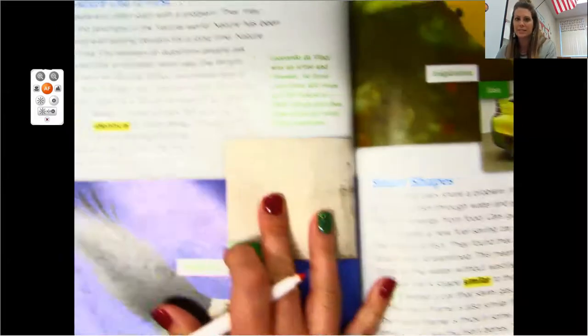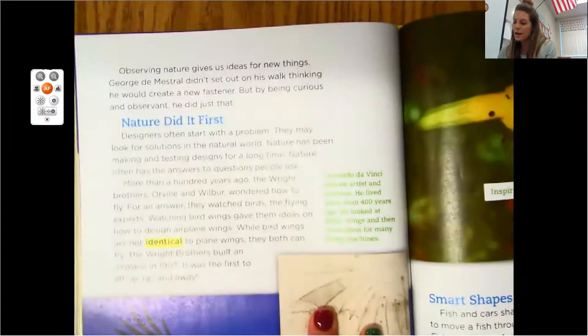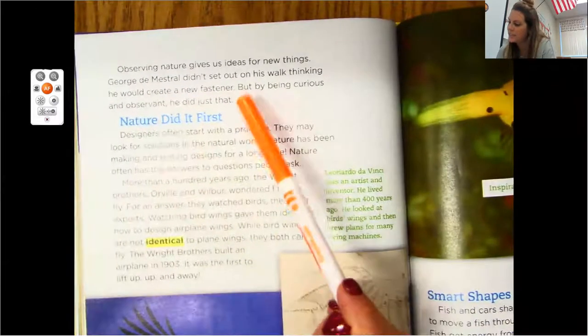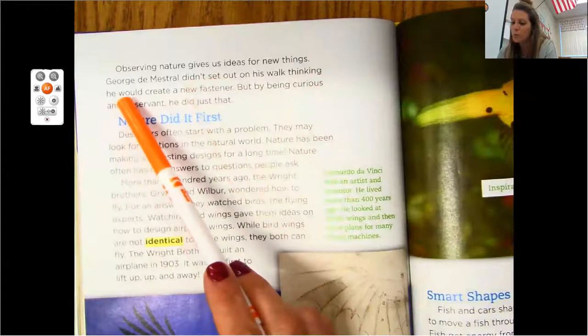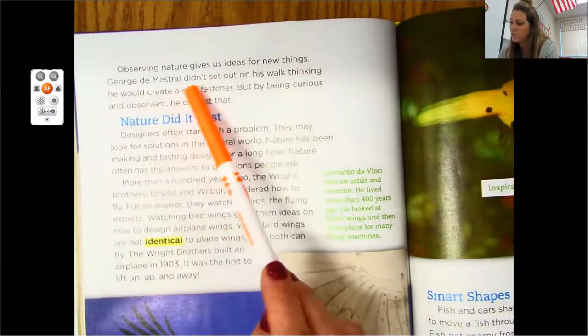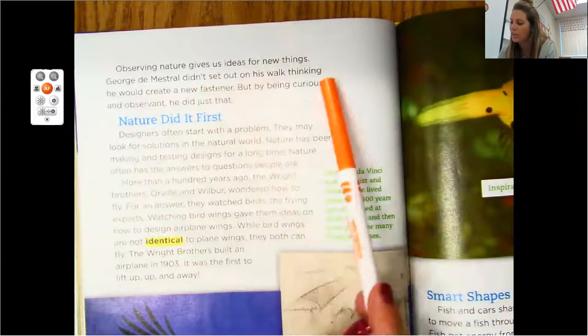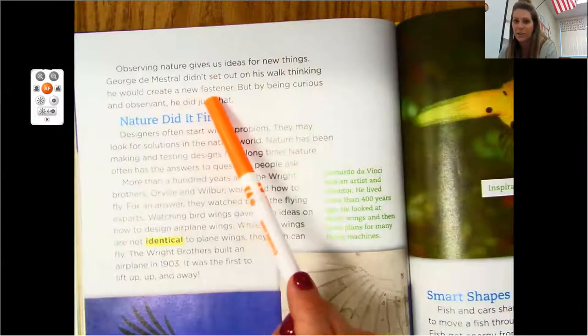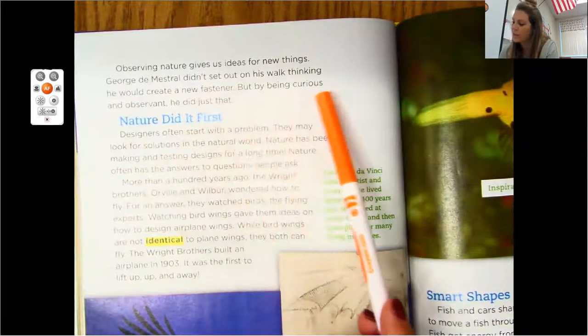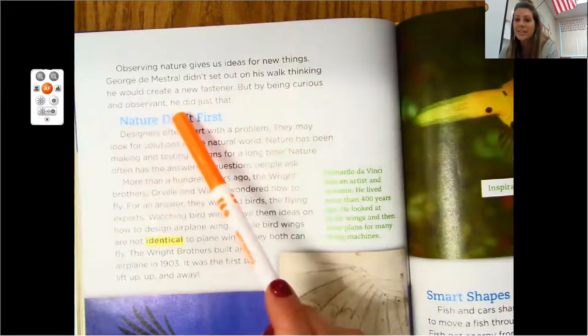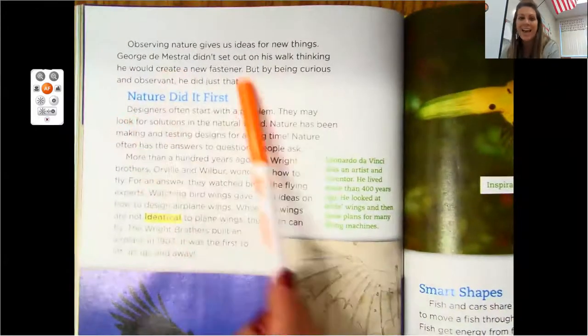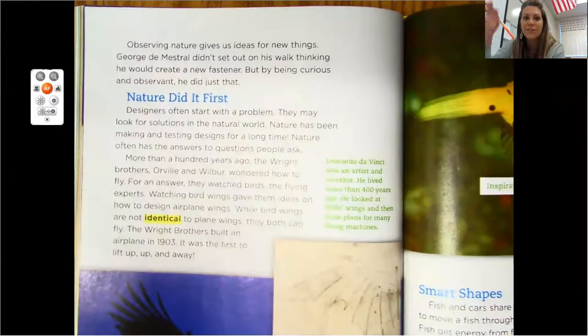So let's go ahead and turn to page 260. Observing nature gives us ideas for new things. George Day Mestral didn't set out on his walk thinking he could create a new fastener, but by being curious and observant, he did just that. All right, here's our next heading. Nature did it first.